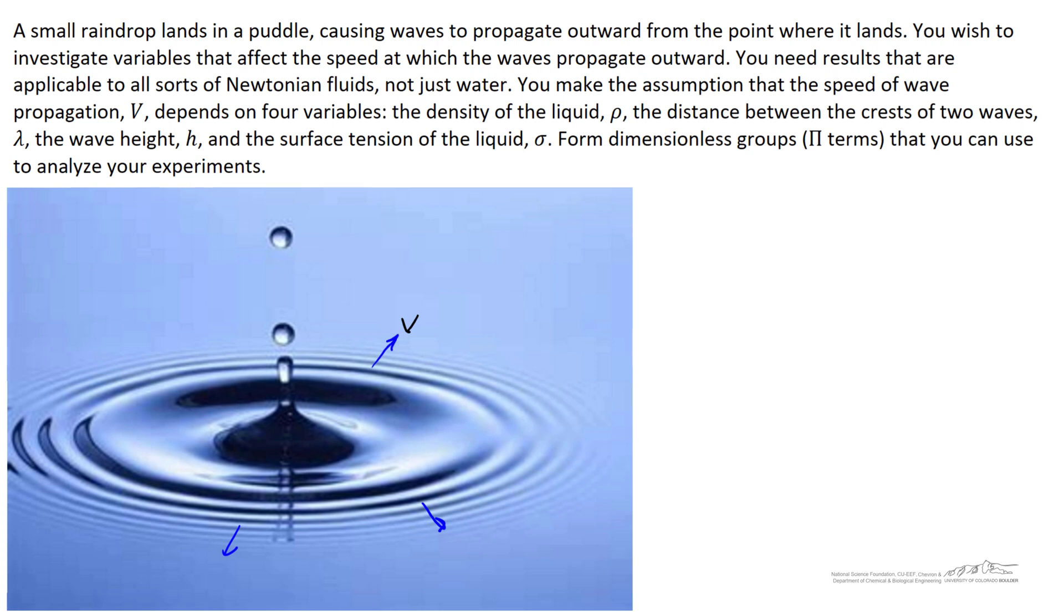One variable being the density of the fluid that you're working with, and the second being the distance between two crests of the waves, and we'll call that value lambda. The third variable being the vertical distance between the crest of the wave and a trough, and we'll call that the wave height h. And finally, you make the assumption that it has something to do with the surface tension of the liquid.